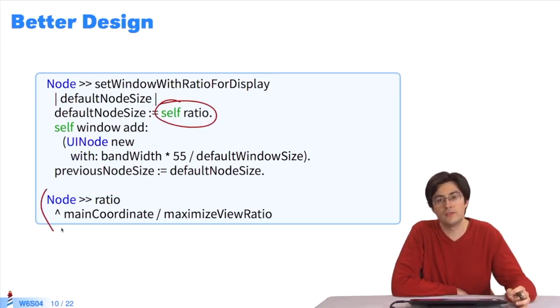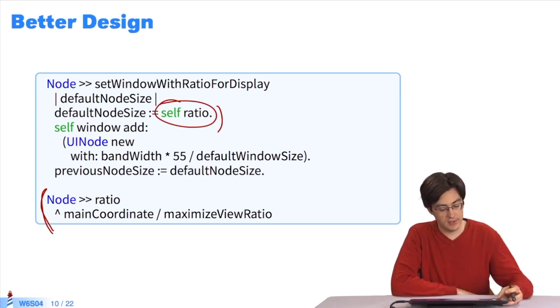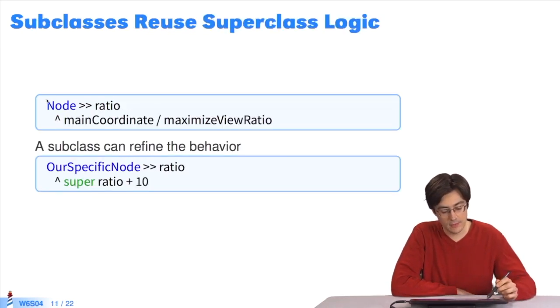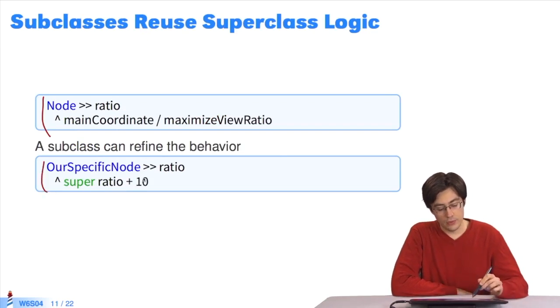The code I selected in the previous slide was transferred into a new method called ratio. And here, where the code was written, we now have a message send. This means that in the subclasses, I can change this behavior.